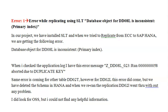Now let's see what the error is. The error is: error while replicating using SLT - the database object for DD02L is inconsistent, the primary index is missing. In our project, let's say we have installed SLT and we have tried to replicate from ECC to SAP HANA and we are getting the following error: database object for DD08L is inconsistent, the primary index is missing.